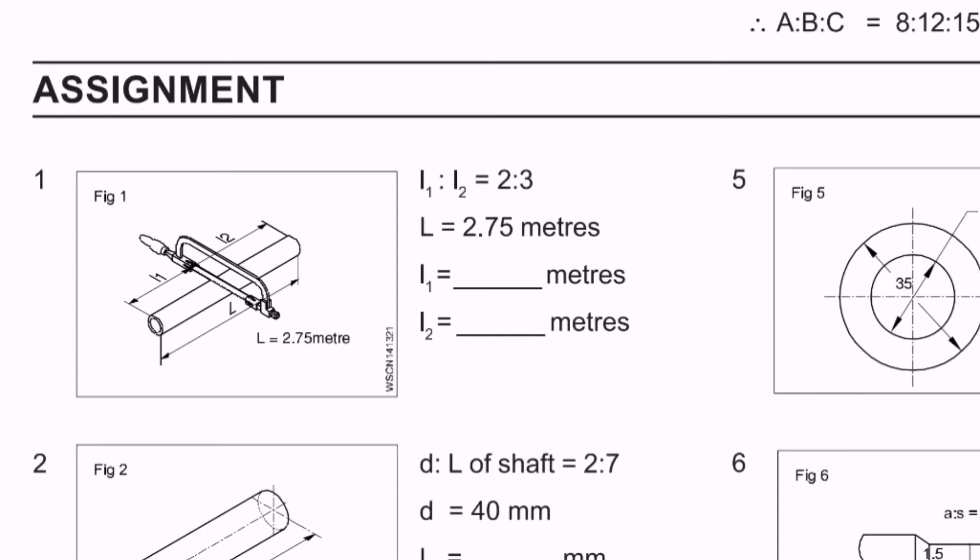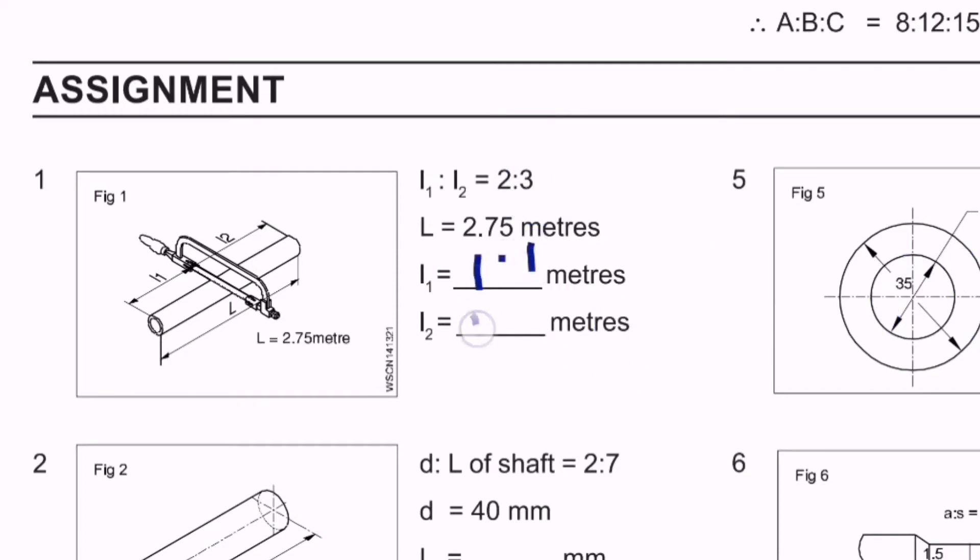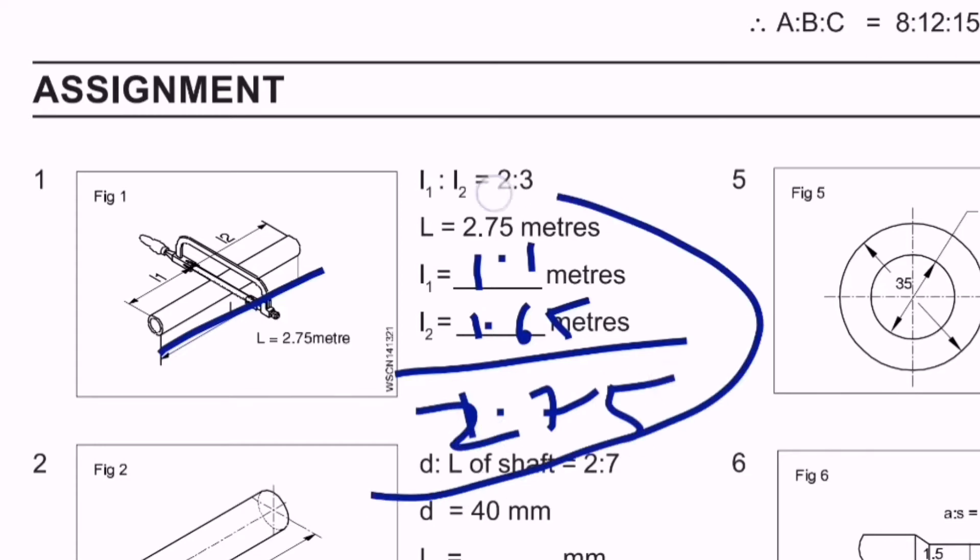2.75 divided by 5 equals 0.55. So each part is 0.55. L1 is 0.55 times 2, that is 1.1 meters. L2 is 0.55 times 3, which equals 1.65. So L1 is 1.1 meters and L2 is 1.65 meters. The total equals 2.75.